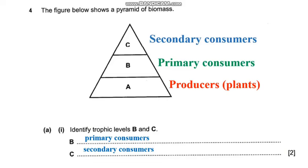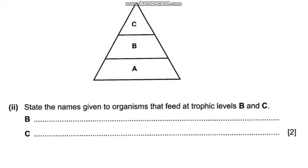So those were the answers to question A1. Let us now move on to question A2. The question reads: state the names given to organisms that feed at trophic levels B and C. At trophic level B we have the herbivores and at trophic level C we have the carnivores.